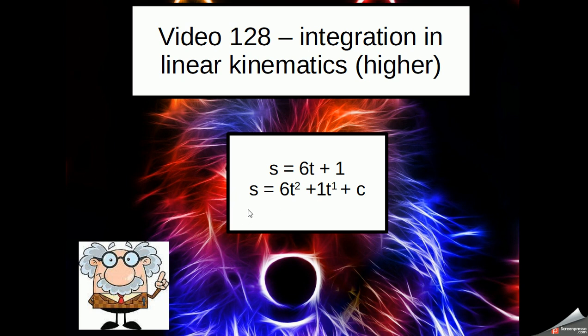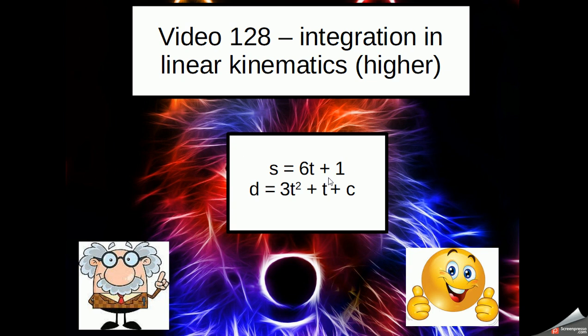So we've got now 6t squared plus 1t to the 1 plus c. I'm then going to divide by those values. So 6 divided by the 2 is 3. 1 divided by the 1 is simply 1. Get rid of the invisible power to the power of the 1, and I've got my displacement equation.